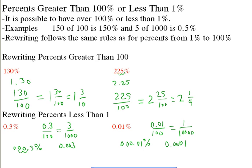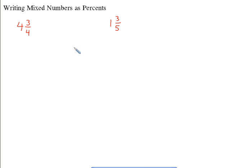So that's how we do it with less than 1%. Now, writing mixed numbers as percents—same thing, relatively easy. For 4 3/4, the 4 is going to mean 400%, and then we've got to deal with the 3 quarters. For 1 3/5, that's going to mean 100% plus whatever we have for the 3 fifths.